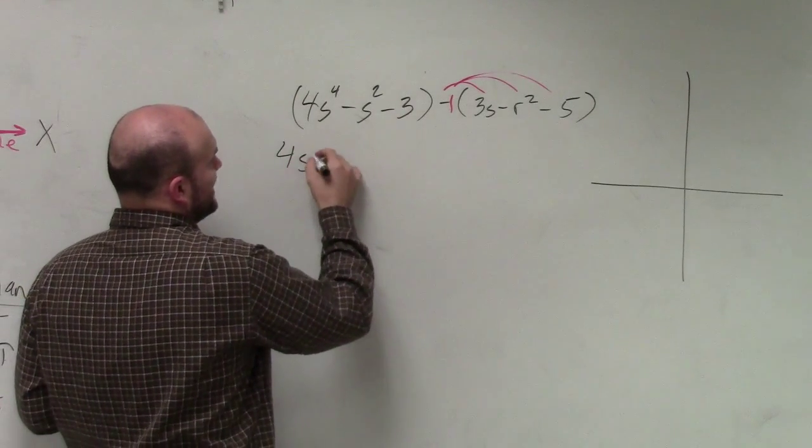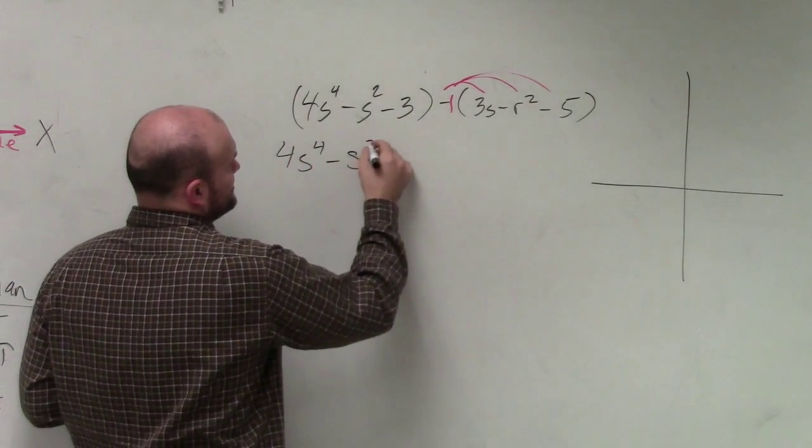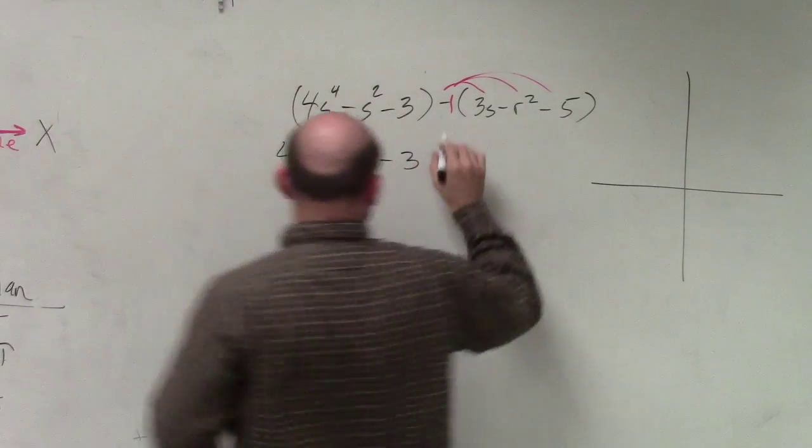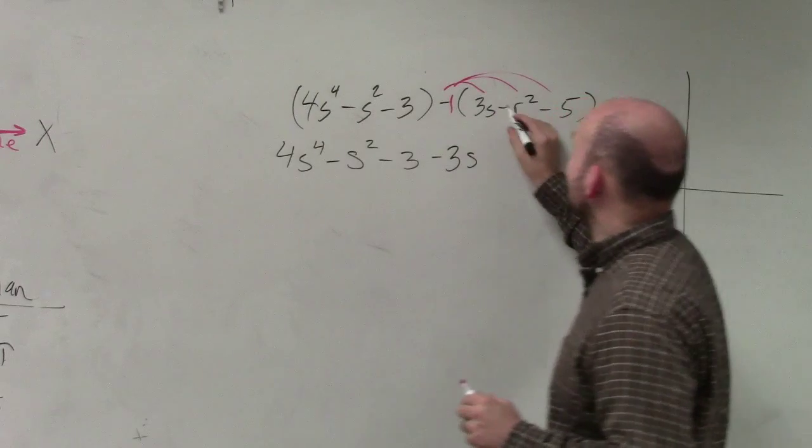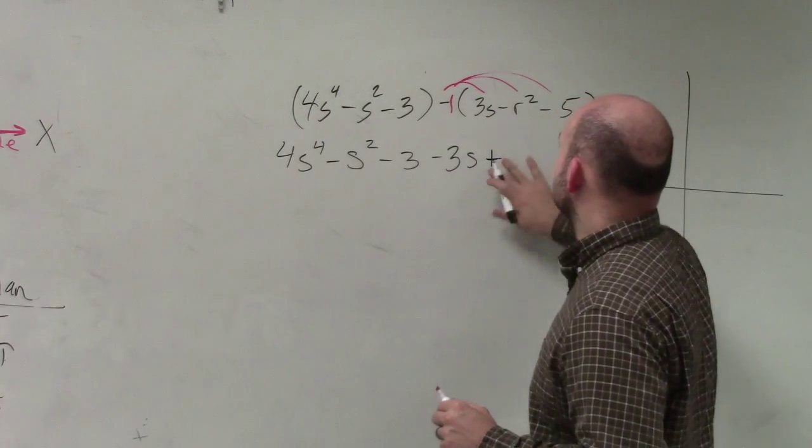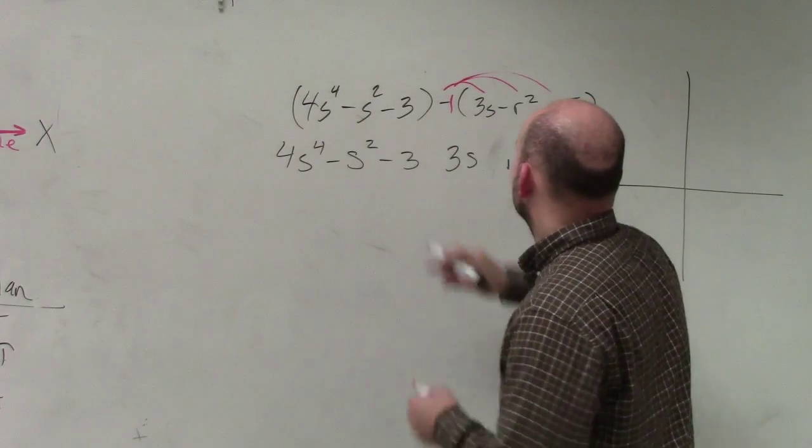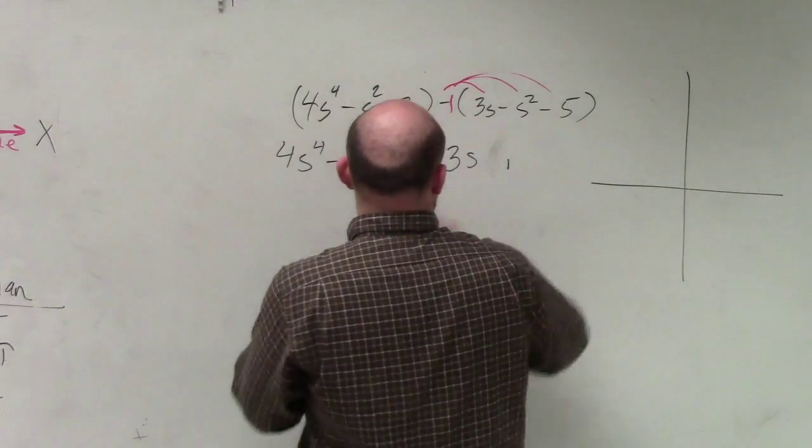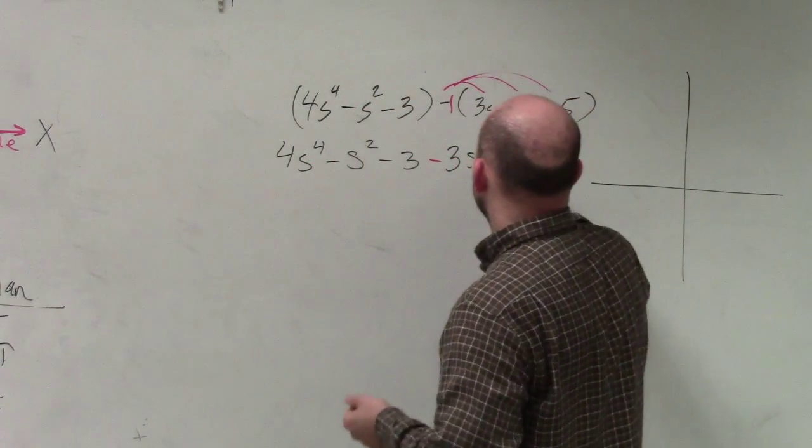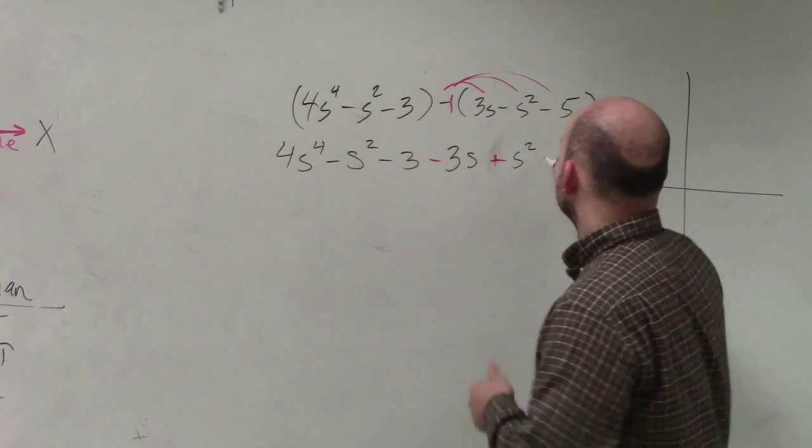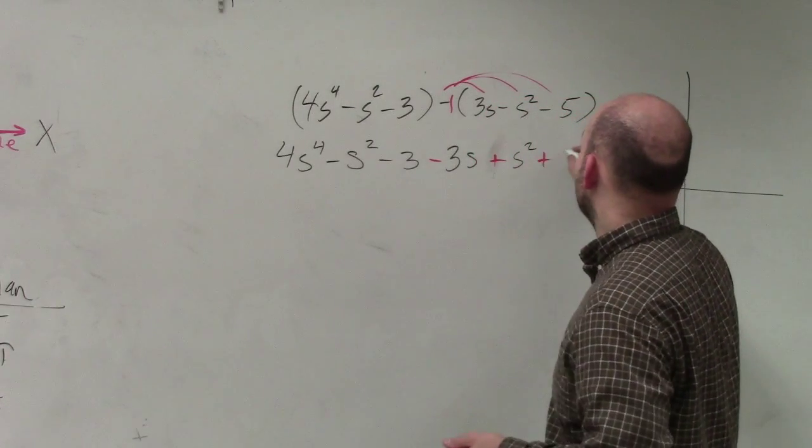So I have 4s to the fourth minus s squared minus 3. Negative 1 times 3s is a negative 3s. Negative 1 times negative r squared, oops. That's supposed to be s. Oh, yeah, that's an s. So that's a negative s. This becomes now a positive s squared. And then this becomes a positive 5.